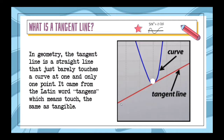In geometry, the tangent line is a straight line that just barely touches a curve at one and only one point. It came from the Latin word 'tangents,' which means touch — the same as tangible.